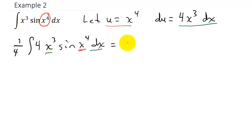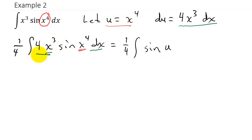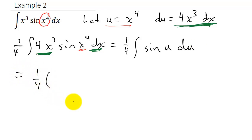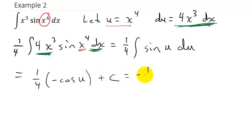So now I have one-fourth times sine u, and then 4x cubed dx is du. So that's going to be one-fourth times the antiderivative of sine u, which is negative cosine u, plus c. This gives me negative one-fourth cosine u plus c.